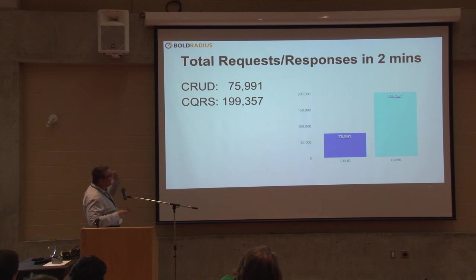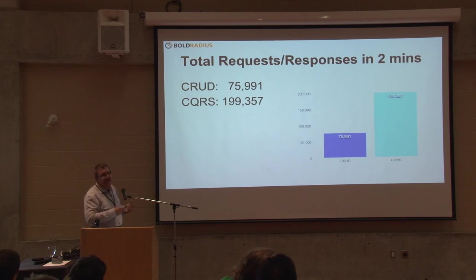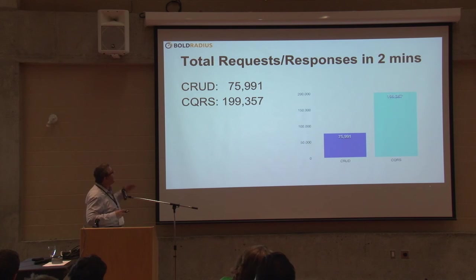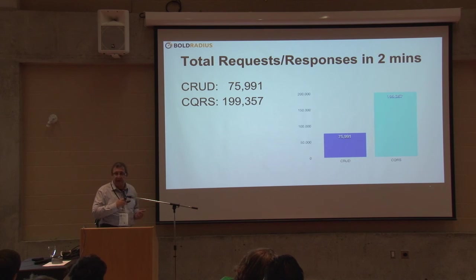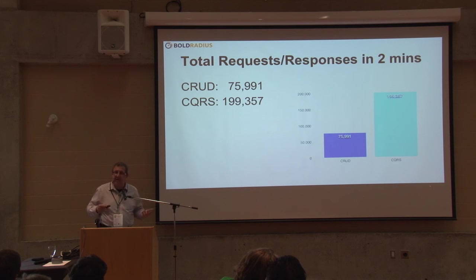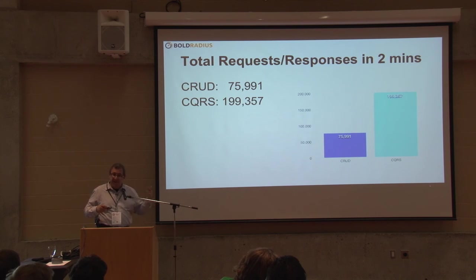To boil it all down: within that two-minute period, our CRUD version handled roughly 76,000 requests and our CQRS version handled about 200,000 requests. That's not altogether unexpected — one is much more in-memory than the other, although writes are still happening so we still have consistency.